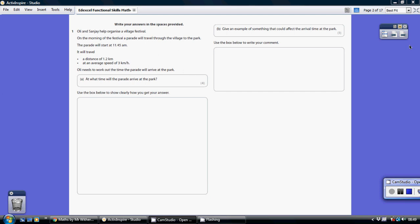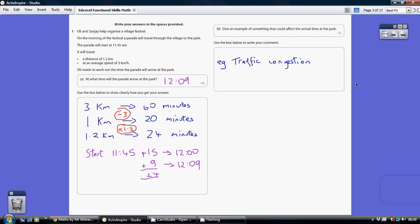Question 1. So we're told that there's an average speed of 3 km per hour. So that means we would travel 3 km in 60 minutes, because 60 minutes is 1 hour.